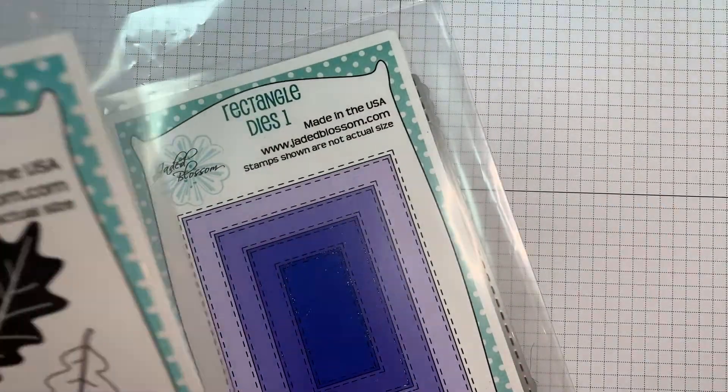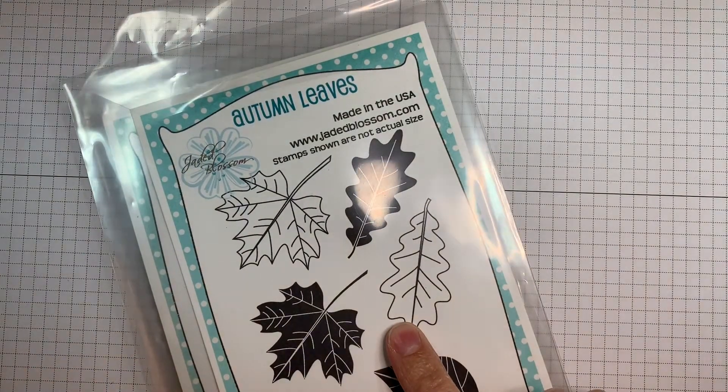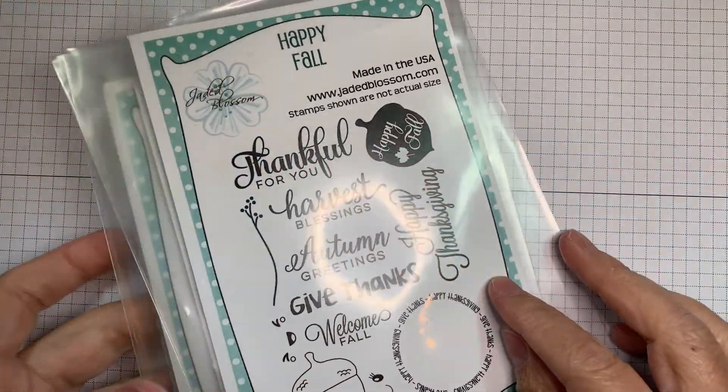Hi everyone, Leanne here from Jaded Blossom. I have a new card to share with you today that I'm making with the Autumn Leaves Stamp Set, the Rectangle Dies and Happy Fall Stamp Set.